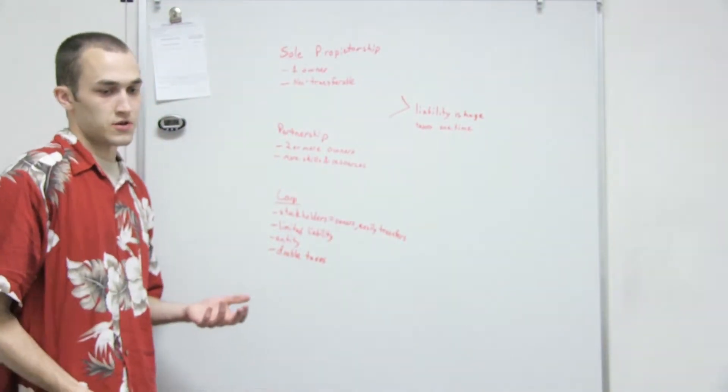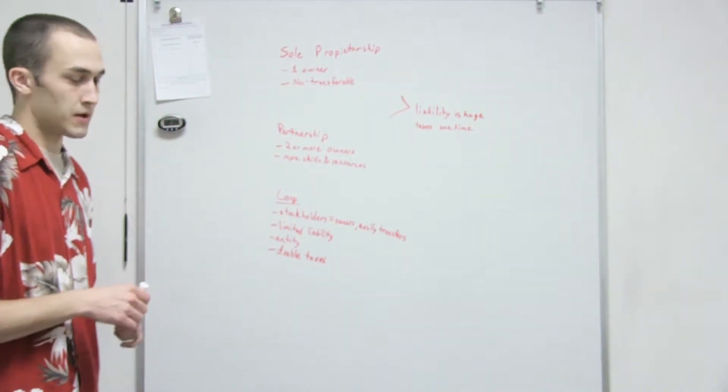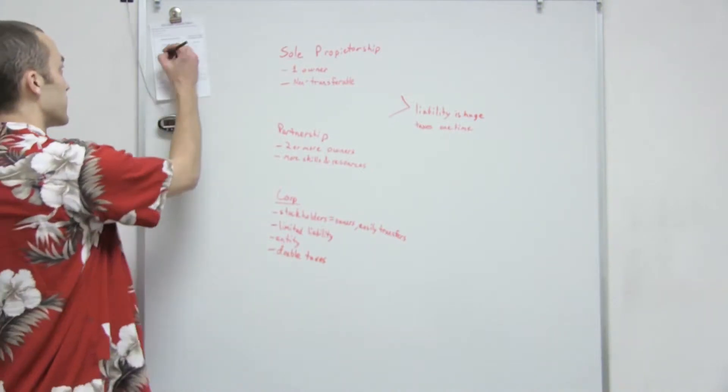So the next topic is pretty straightforward. It's just talking about the users of accounting information.